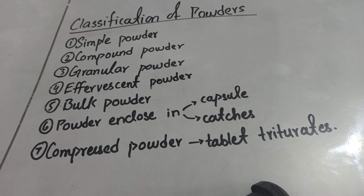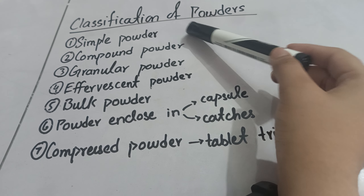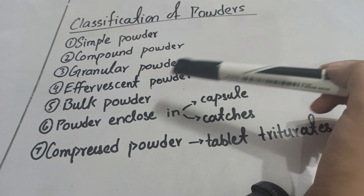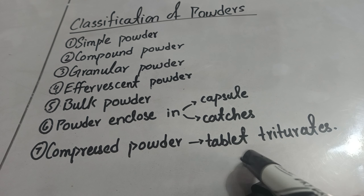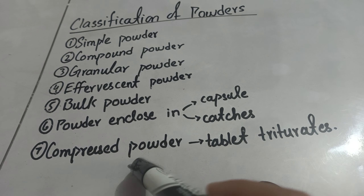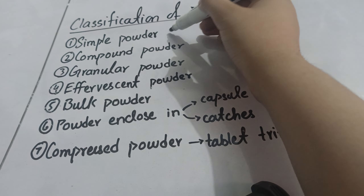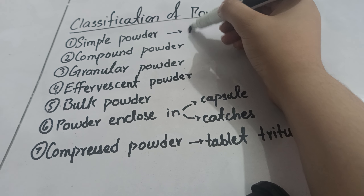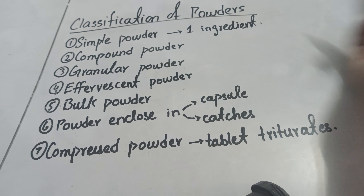Now we are going to see how powder is classified. There are six or seven classifications: simple powder, compound powder, granular powder, effervescent powder, bulk powder, powder enclosed in capsules and cachets, and compressed powder — which is a powder in which a tablet is triturated to obtain the powder. In this lecture we are only going to discuss simple powder and compound powder. Simple powder consists of only one ingredient and is very easy to prepare.